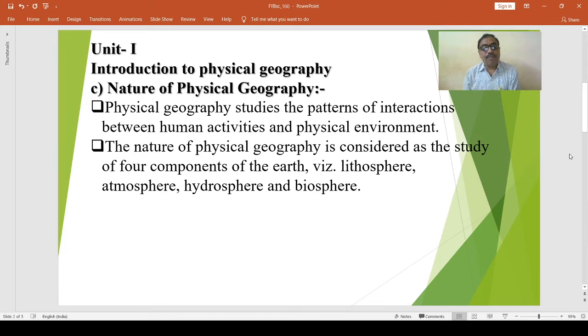Thus, the nature of physical geography is considered as the study of four components of the earth. And these components are lithosphere, atmosphere, hydrosphere, and biosphere.